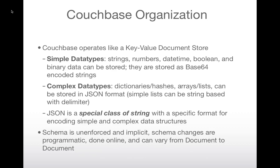Couchbase, because it's a key-value document store using JSON, can represent simple data types like numbers and datetimes, but also dictionaries, hashes, arrays, and lists. Binary data is stored as Base64-encoded strings. If you're new to JSON, it's very similar to XML but with a much lighter-weight syntax. You can store your objects and all their complexity in JSON and serialize/deserialize them — a strong advantage so you don't have to split lists and hashes into different tables and do joins.